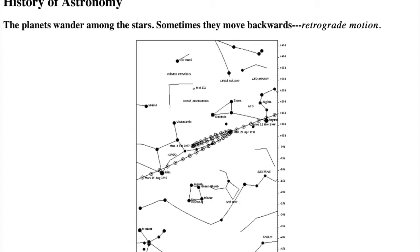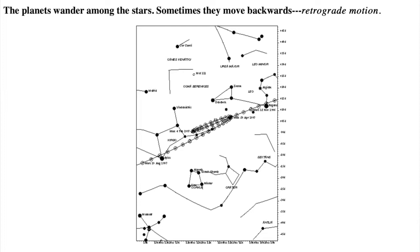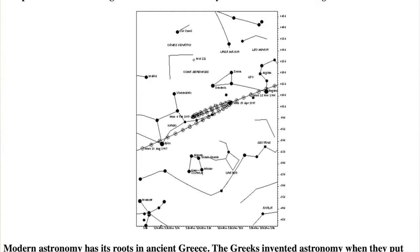Figuring out the correct reason for the retrograde motion required a major revolution in our understanding of our place in the universe, which I'll get to in this lecture.